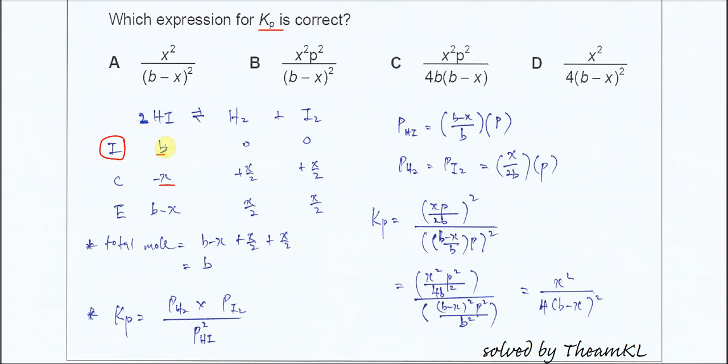When HI is minus X, H2 and I2 must both be plus X over 2, because the mole ratio of HI to the H2 and I2 is 2 to 1. So that's why when it's changed, the H2 and I2 must be half compared to the HI. So when HI is minus X, H2 and I2 must be plus X over 2.